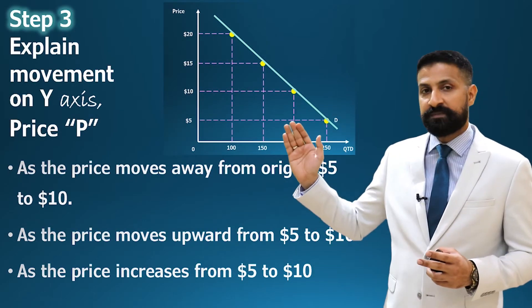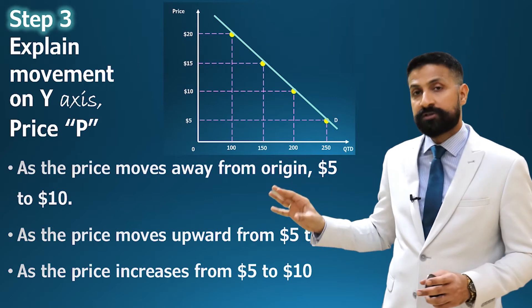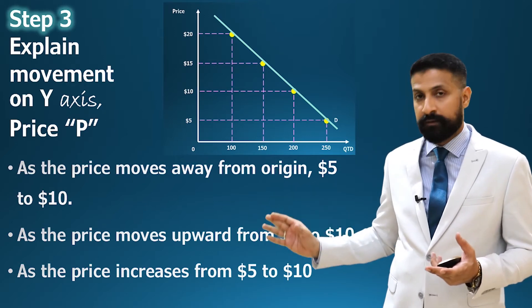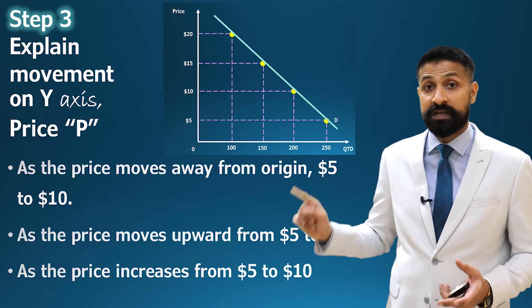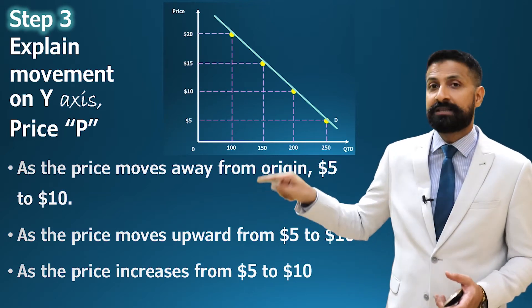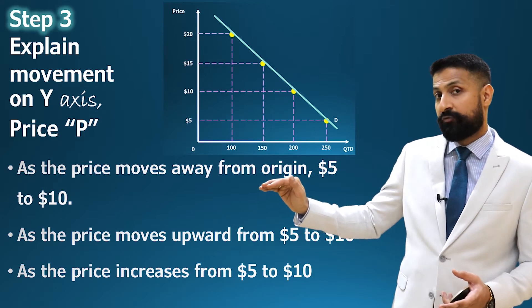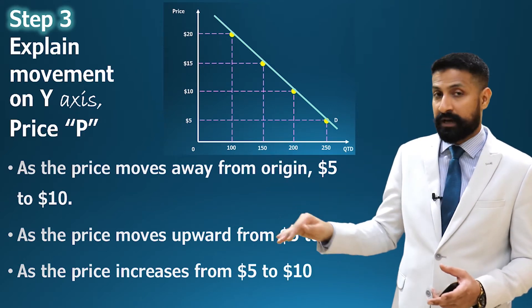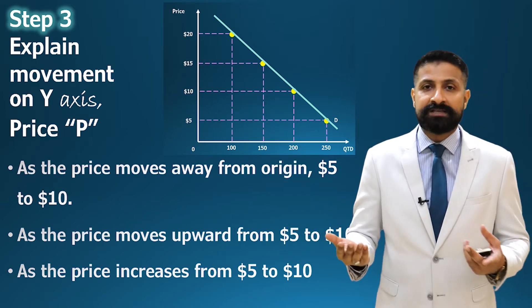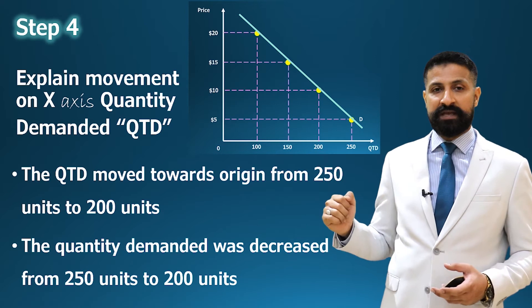Step number three: explain the movement on the y-axis and x-axis. There are three different ways to explain movement. The first way: 'As the price moves away from origin' — origin is the zero point where all numbers begin — 'from $5 to $10.' The second way: 'As the price moves upward from 5 to 10.' The third and simplest way: 'As the price increases from 5 to 10.' That's it — step number three.